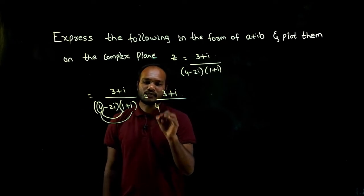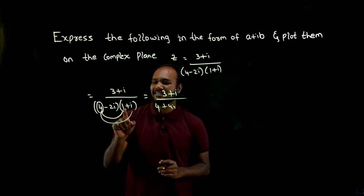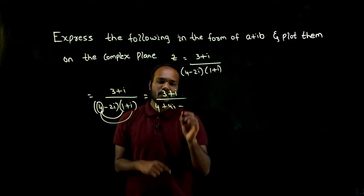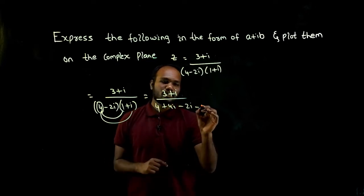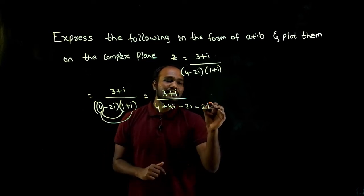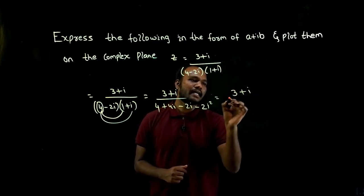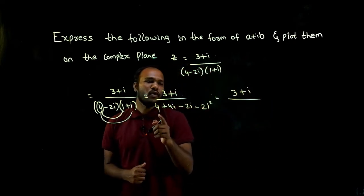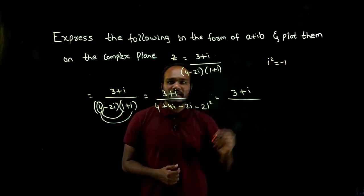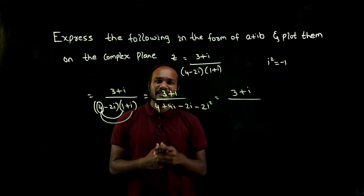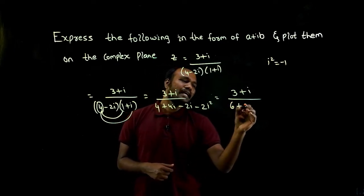So 4 into 1 is 4, 4 into i is 4i. Next, minus into plus is minus, 2i into 1 is 2i. Again minus into plus is minus 2 times i is i squared. So what do we have? 3 plus i divided by 4 plus 2 because i squared value is minus 1, so minus 1 into minus 2 is plus 2.